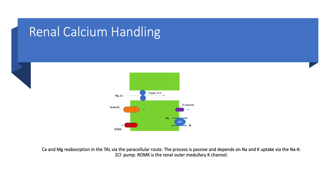Claudin-14 acts against that paracellular transport. This process is passive and depends on the sodium and potassium uptake via the sodium-potassium 2-chloride (NKCC2) pump, which generates the driving force required for passive reabsorption of both calcium and magnesium. ROMK — the renal outer medullary potassium channel — as mentioned many times before, is also part of this process. This diagram applies to both calcium and magnesium.